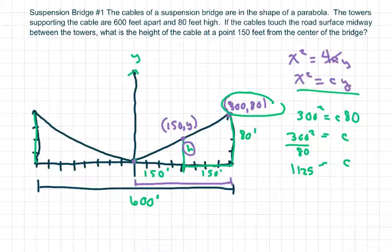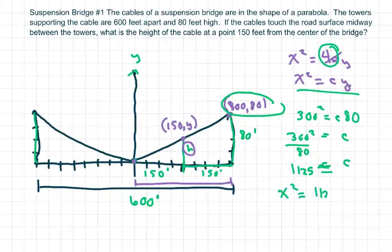Now my equation is x² = 1125y. To solve for h, our h is really our y, so let's change this to h instead. We're solving for h in the equation x² = 1125h.